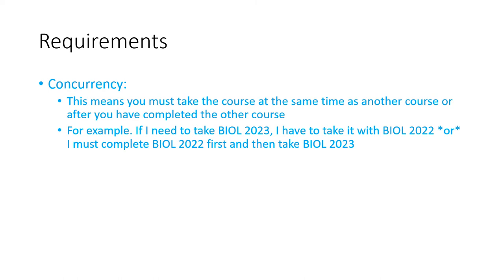Concurrency means you must take the course at the same time as another course, or after you have completed the other course. For example, if I need to take Biology 2023, I have to take it with Biology 2022, or I must complete Biology 2022 first and then take Biology 2023.